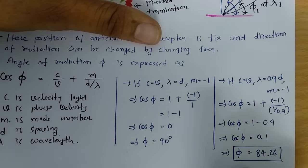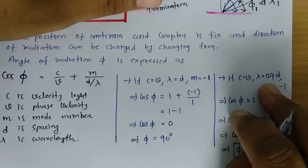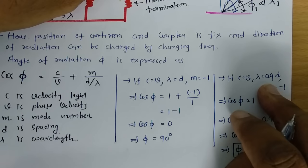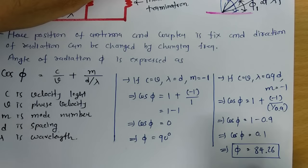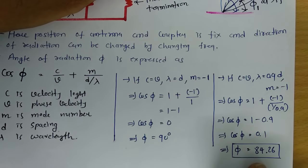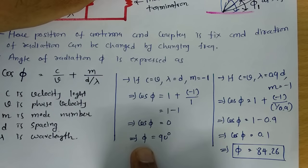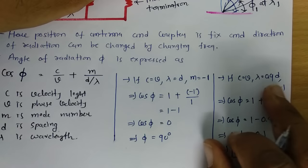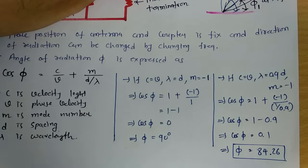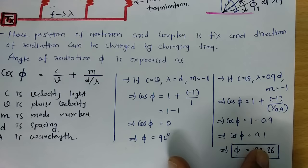One can observe, here I have changed my wavelength. By changing wavelength, I can change frequency. Ultimately, I have changed frequency and by changing frequency, I have changed wavelength. If I change frequency, beam direction has changed. Now it is 84.26. In previous case, when lambda equals D, that phi was 90 degrees. Now for lambda equals 0.9D, that phi is 84.26. This is how we can steer beam by changing frequency.